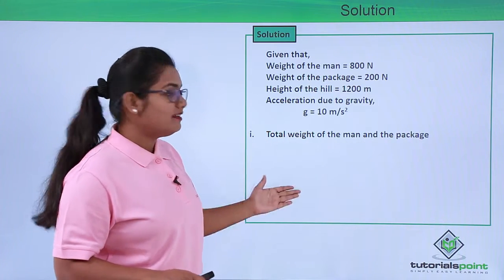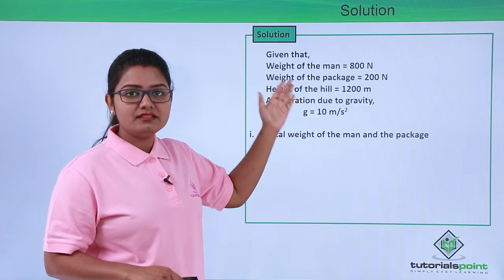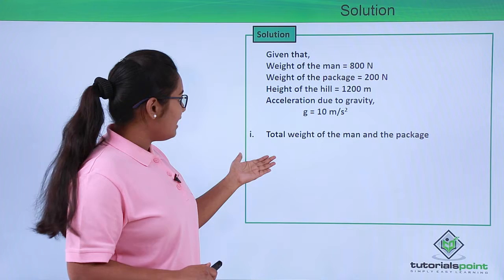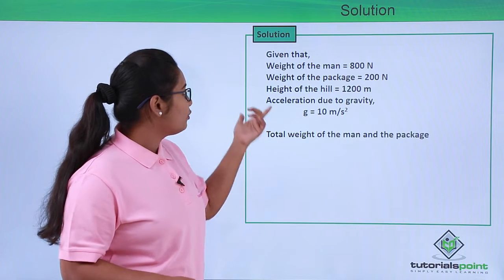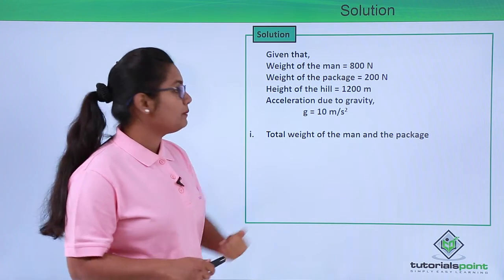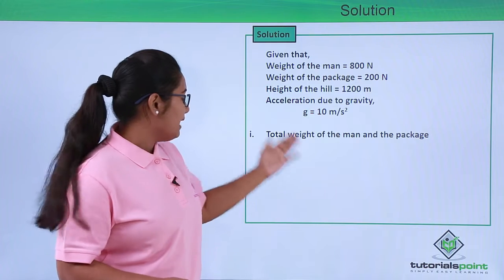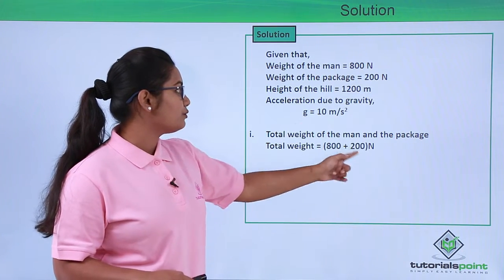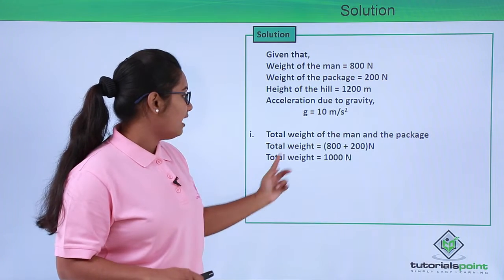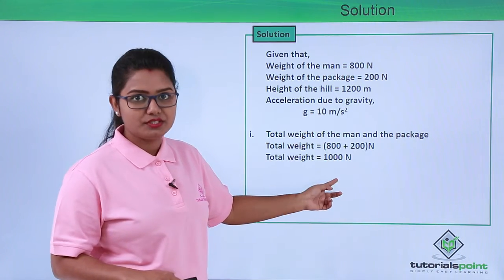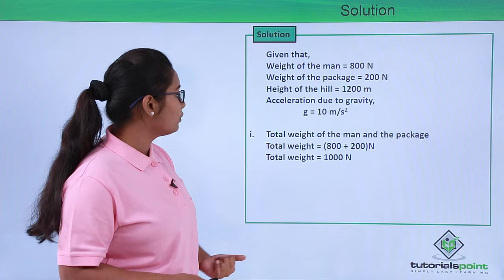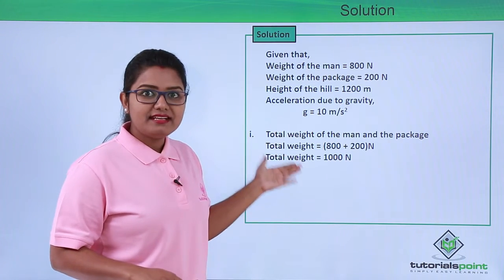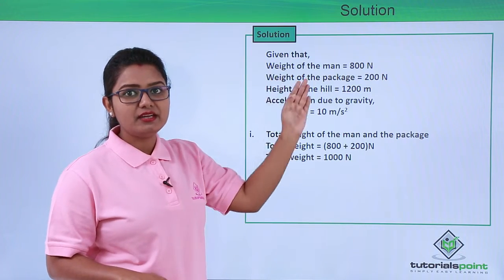We need to find out the work that the man has done against gravity to reach the summit at the top of the hill. For that, we need to find the total weight of the man with the package. The total weight is 800 plus 200 Newton, which equals 1000 Newton.